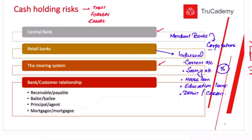Merchant banks do not offer such services — they serve big corporations and government institutions. Regarding bank-customer relationships: the bank can be a creditor or debtor — for example, if you invest in a savings account, the bank pays you interest; if you borrow money, the bank receives interest from you. The relationship can also be bailer and bailee — for example, if I am short of cash, I can take a bank overdraft or a loan, and the bank can bail me out of a difficult financial situation.